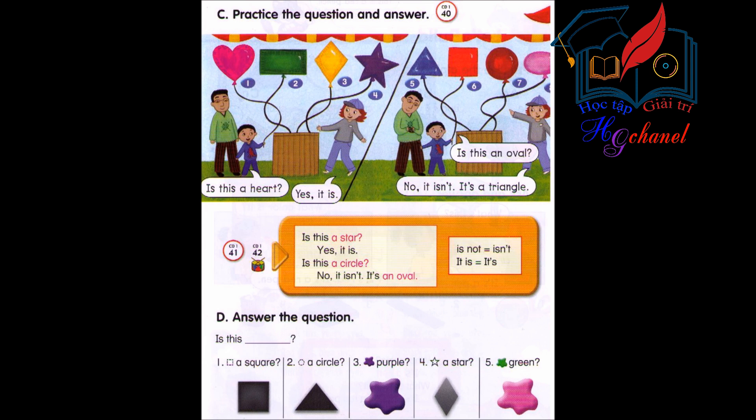Number 4. Is this a star? Yes, it is. Number 5. Is this an oval? No, it isn't. It's a triangle. Number 6. Is this a triangle? No, it isn't. It's a square.